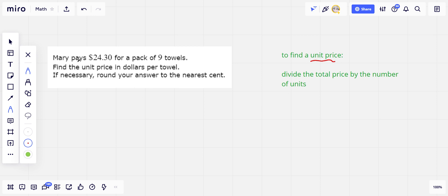So we're going to be doing dividing here, and I think it's okay to use a calculator. I'm going to do the long division just for some practice because I don't think these look super hard, but you may want to use a calculator. This first one says Mary pays $24.30 for a pack of 9 towels. So we're going to divide $24.30 by 9 to find the unit price, that is, the price of one towel.